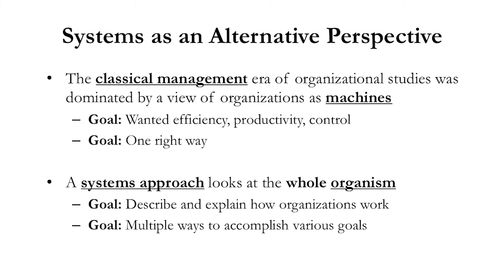A systems approach looks at the whole organism — not the little pieces of the machine — but how it all fits together as a whole. The goal of the systems approach is to describe and explain how organizations work. They don't have a control mindset, and they wanted to pursue multiple ways to accomplish the various goals of the organization. They're not looking for the one right way. So it's best to understand the systems approach as a counterpoint, an alternative, or even a reaction against the classical management era and school of thought.